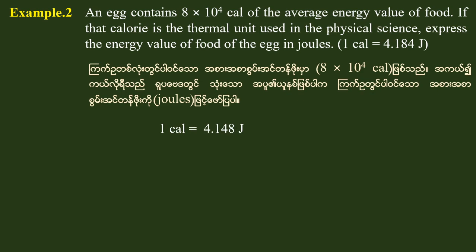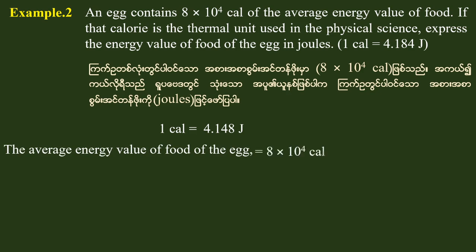Given that 1 calorie is equal to 4.184 joules, if you have 8 × 10⁴ calories, then the result is 3.35 × 10⁵ joules.